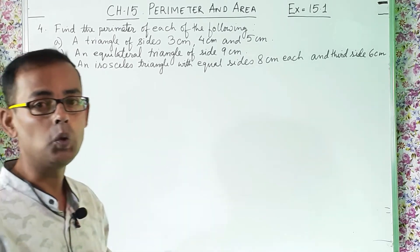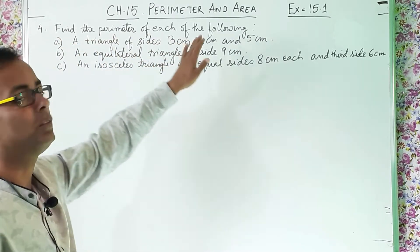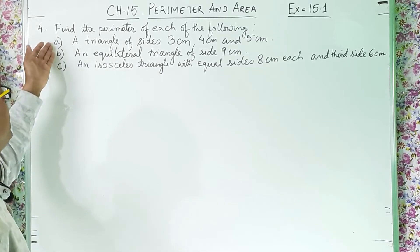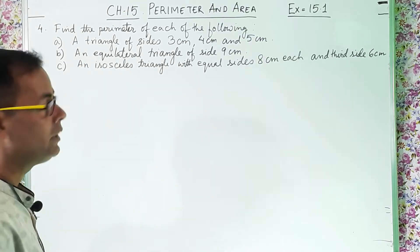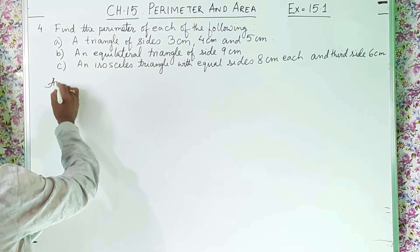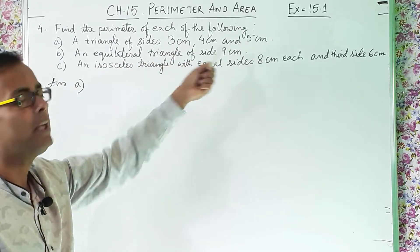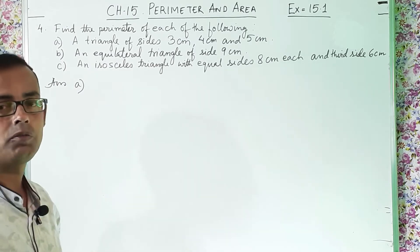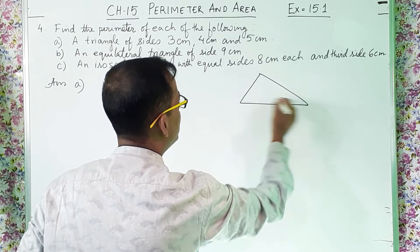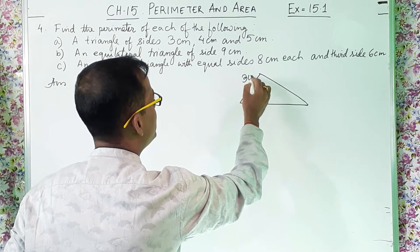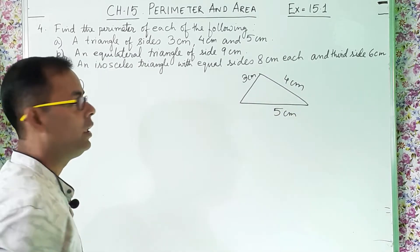Let's see what Question 4 is telling us. It says: find the perimeter of each of the following. They have given three parts — A, B, and C. Let's solve the first one. For answer A: a triangle of sides 3 centimeter, 4 centimeter, and 5 centimeter. So let us draw a triangle. Suppose this is a triangle — this side is 3 cm, this side 4 cm, and this side 5 cm.